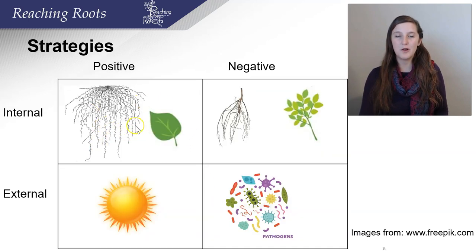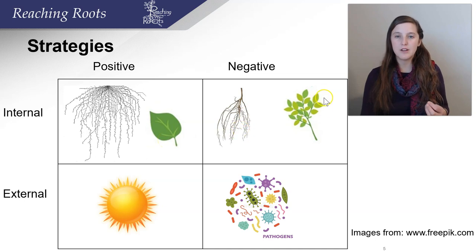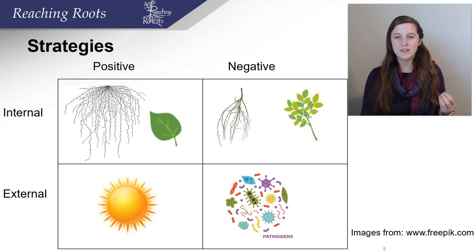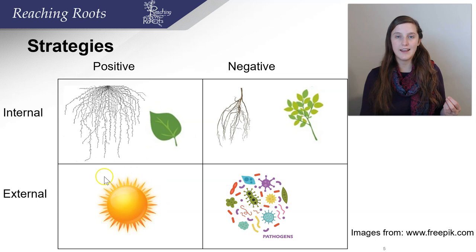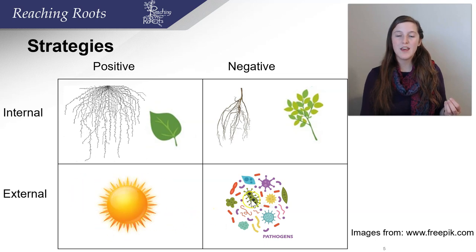Some positives for a plant would be the adaptation of having a large root system or a larger leaf surface area. A negative would be a small root system or small leaves — though sometimes small leaves are a competitive advantage. External factors are things the plant can't control, like the amount of sunlight in that particular area or the temperature. But as horticulturists, we can affect this external environment. Some threats that plants face are pathogens, and those are things the plant cannot control.